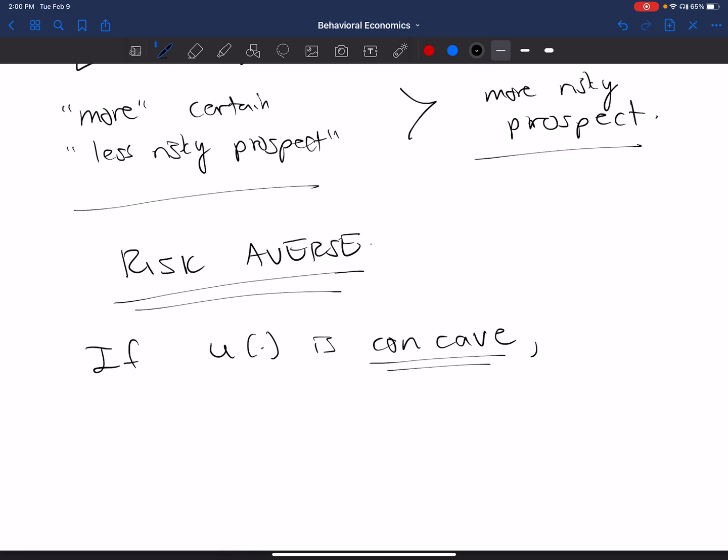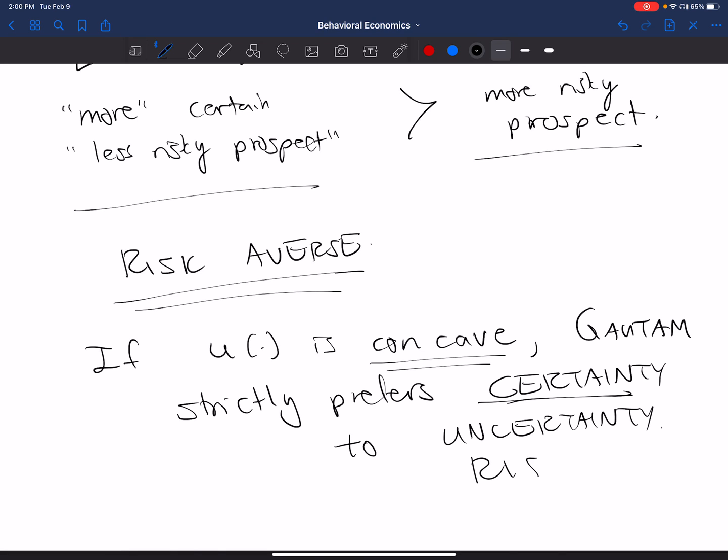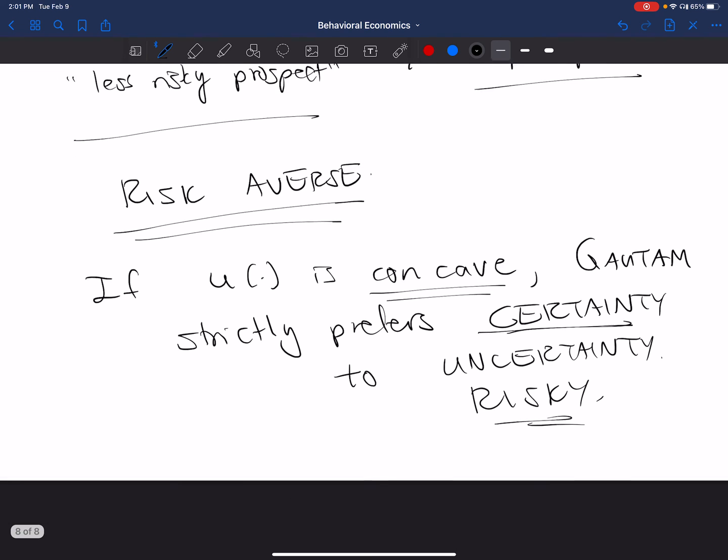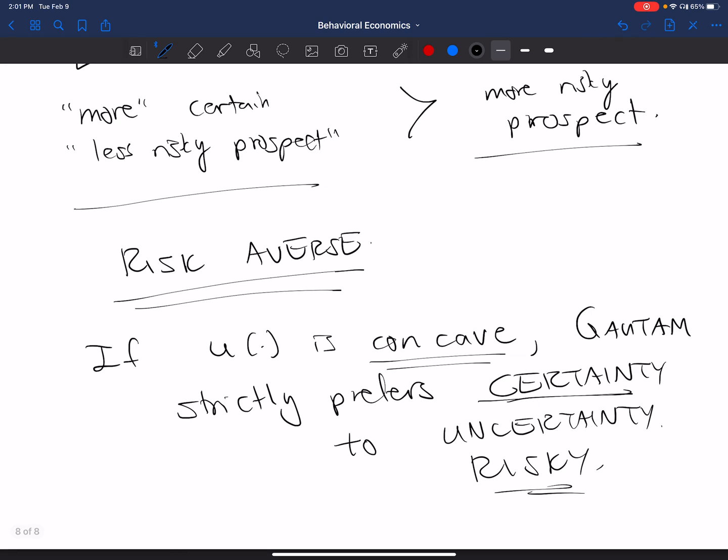the agent strictly prefers, so Gautam here, strictly prefers certainty to uncertainty. And we say if U is concave, then the person is risk-averse. Gautam in this case is risk-averse. Gautam dislikes risk.